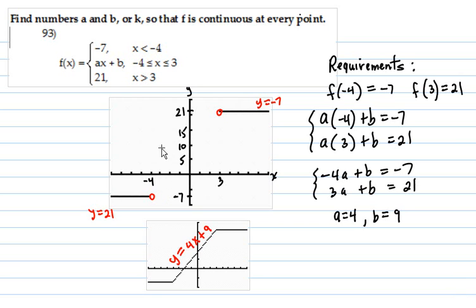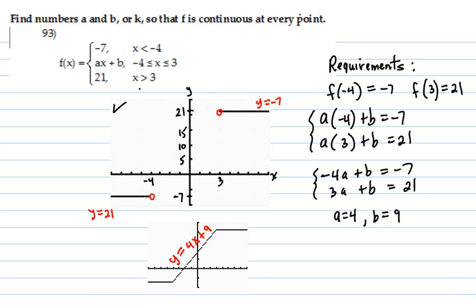So here is your graph. And you have a piece for x less than negative 4. You have this piece over here. And for x greater than 3, you have this constant 21 over here. And you have open circles at the ends of each of those.